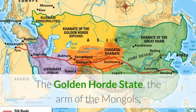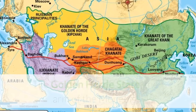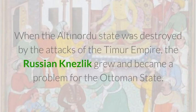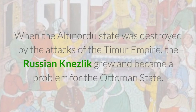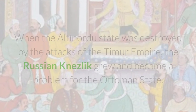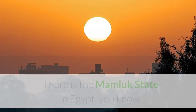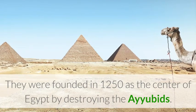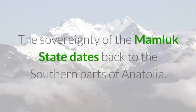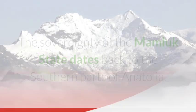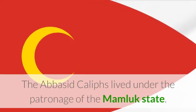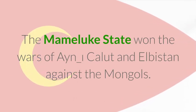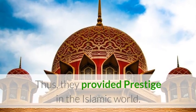Fourth, the Golden Horde state. The Golden Horde, the Mongol arm, dominated the northern part of the Black Sea in the years when the Ottoman state was founded. When the Golden Horde state was destroyed by the attacks of the Timur Empire, Russian power grew and became a problem for the Ottoman state. Fifth, the Mamluk state. The Mamluk state in Egypt was founded in 1250 by destroying the Ayyubids. Their sovereignty extended to the southern parts of Anatolia. The Abbasid caliphs lived under Mamluk patronage. The Mamluk state won the battles of Ain Jalut and Elbistan against the Mongols, providing great prestige in the Islamic world.